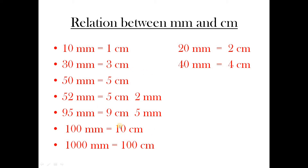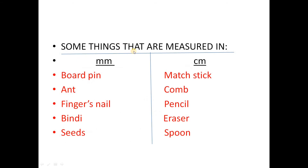We have to remember this. Some things are measured in millimeter and centimeter. Things we can measure in millimeter: both pins, they are very small; finger nails; tiny teeth — these are very small, so measured in millimeters. In centimeter: matchsticks, comb, pencil, eraser, spoon — these things are measured in centimeters.